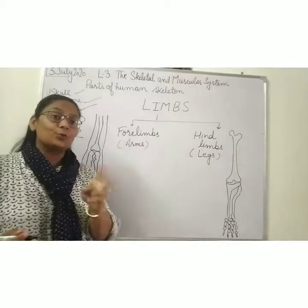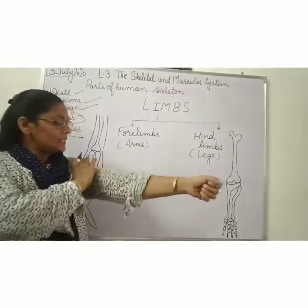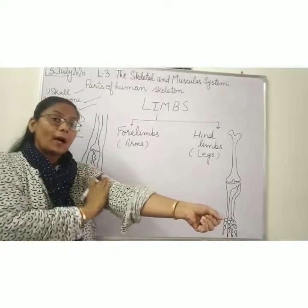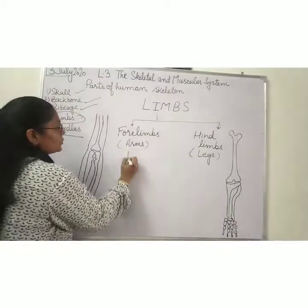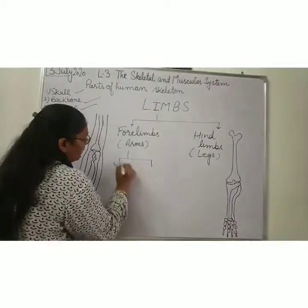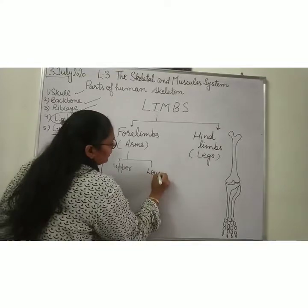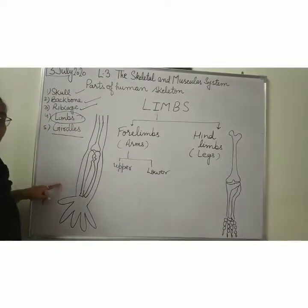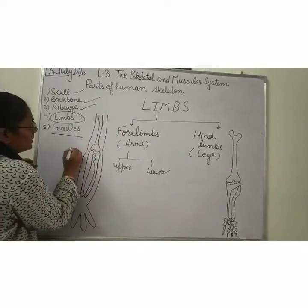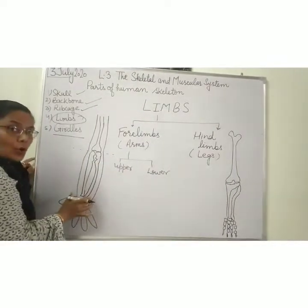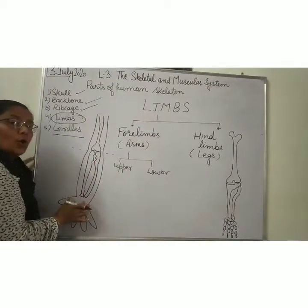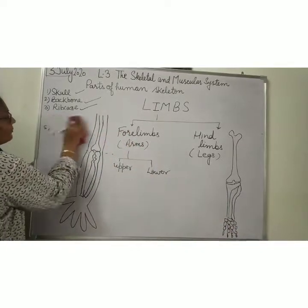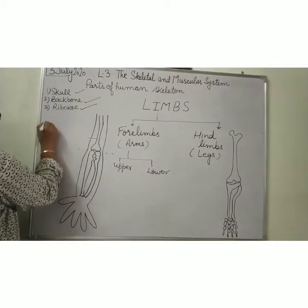Our arms are divided into two portions: upper arm and lower arm, because the bone of the upper arm is different from the lower arm. You can see in this picture — this is the upper arm and this is the lower arm. The bone present in the upper fore limb is called the humerus.